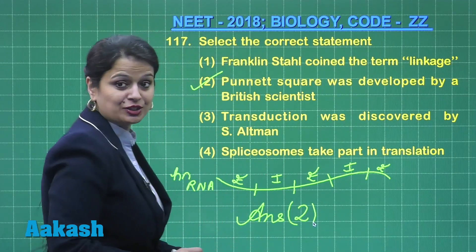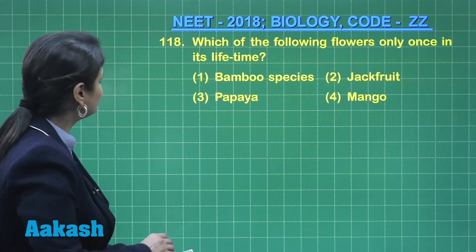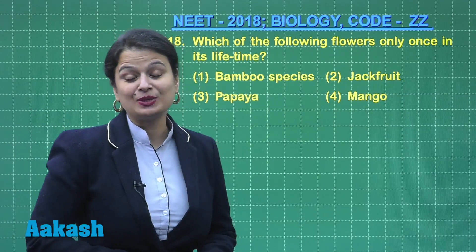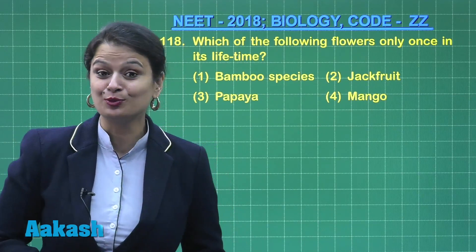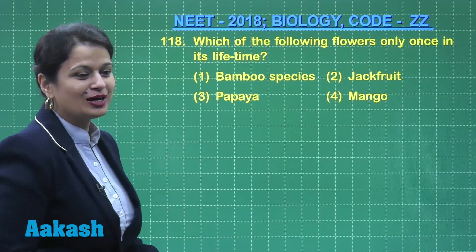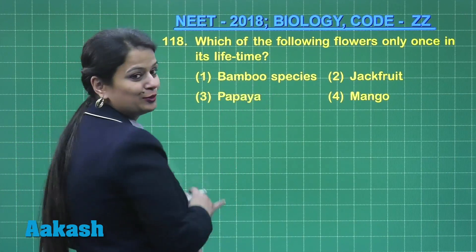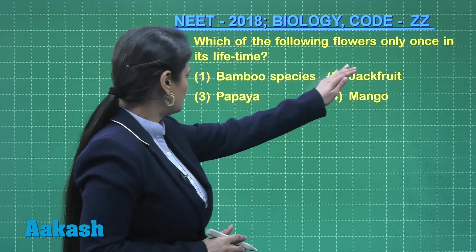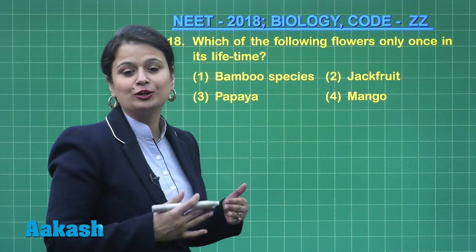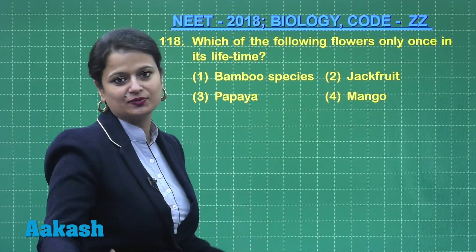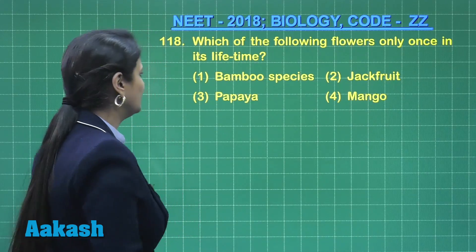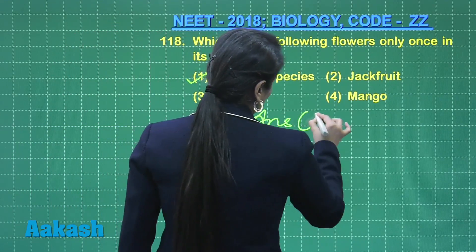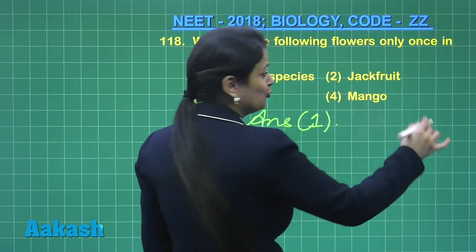Moving on to question 118: which of the following flowers only once in its lifetime? We need to look for a monocarpic plant. Bamboo is monocarpic — it flowers after 50 to 100 years. The rest of the three plants flower several times in their lifetime, so they are all polycarpic. The monocarpic option is option number one.